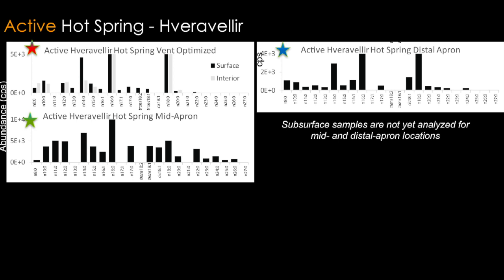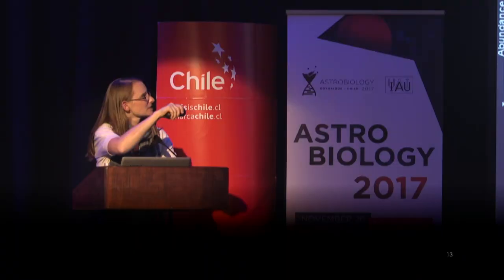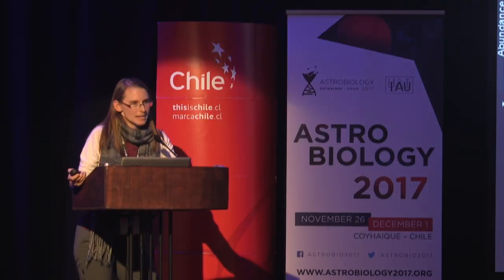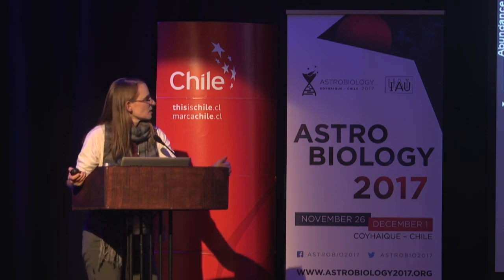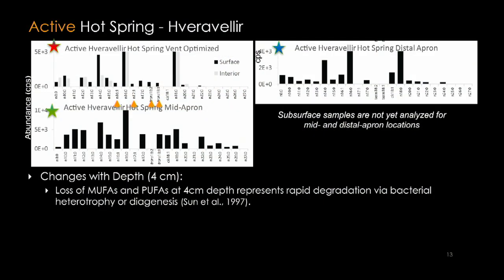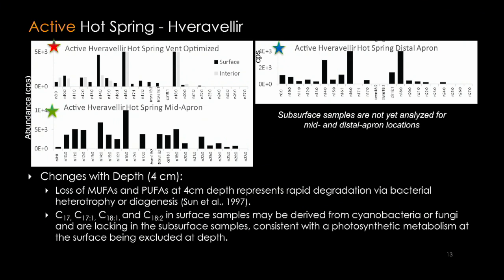Now let's think about what's happening in the subsurface. These gray bars represent what's in the subsurface — still very much a work in progress. Changes with depth: we see a loss of monounsaturated and polyunsaturated fatty acids at just 4 centimeters depth, representing rapid degradation via either bacterial heterotrophy or diagenesis. The cyanobacterial FAMEs — C17, C17:1, C18:1, C18:2 — present in the surface sample are excluded in the subsurface, possibly reflecting the exclusion of photosynthetic metabolism at depth, which is something we would expect.